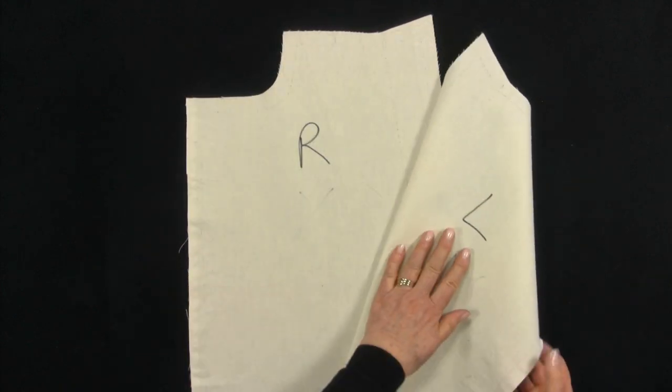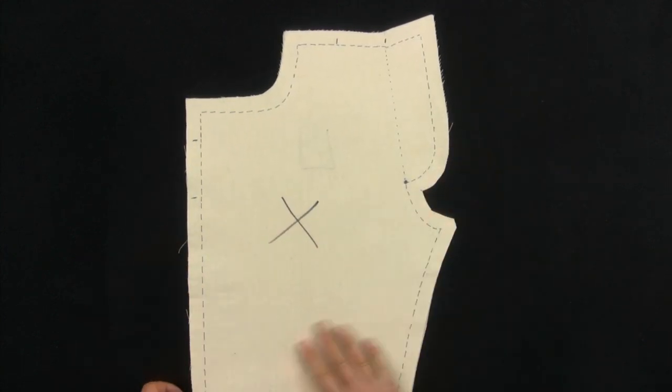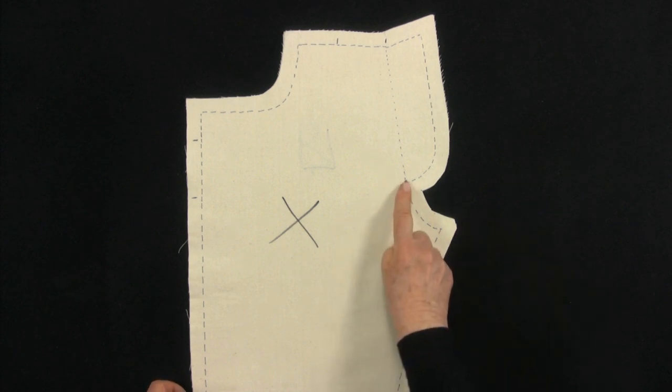On the right side I've labelled R and L for the right and left front pieces. The dot should be marked with a tailor's tack.